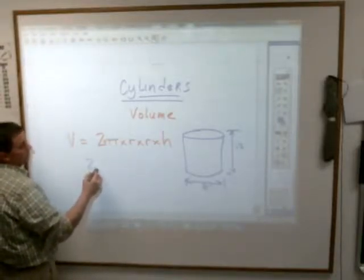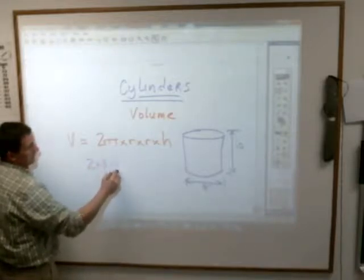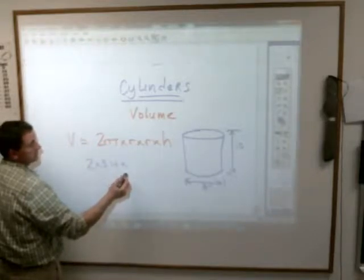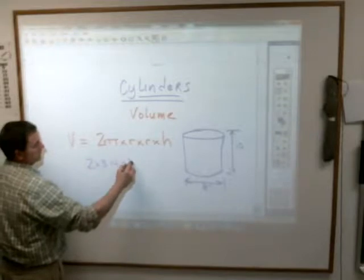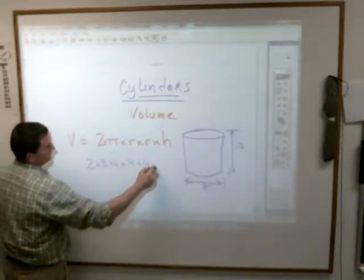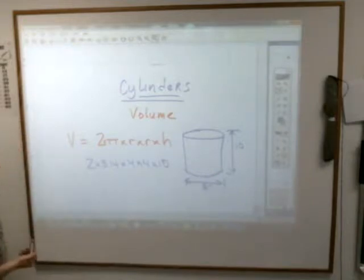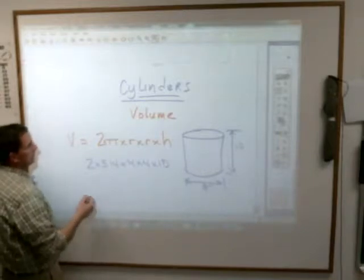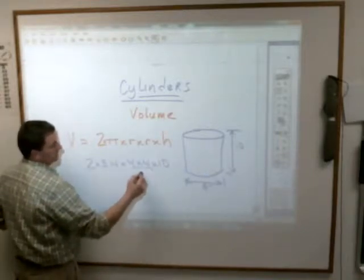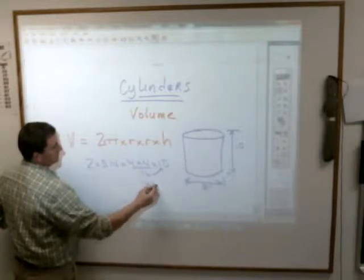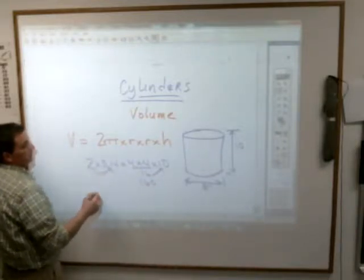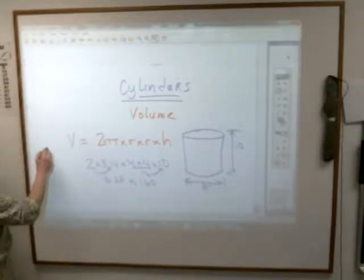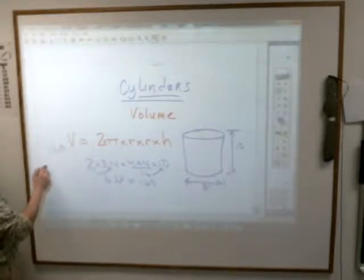You simply just need to fill in the blanks. In this case it would look like this. What's pi? We'll use 3.14. What's the radius? What's the radius? Somebody, radius. What's the height? 10. And you can multiply in any fashion, any way you want.